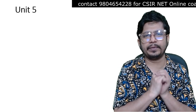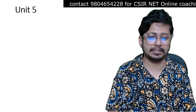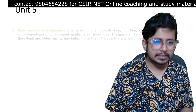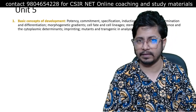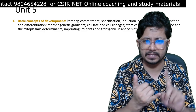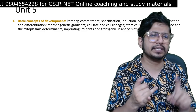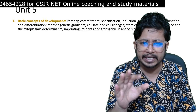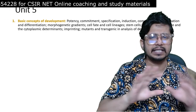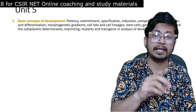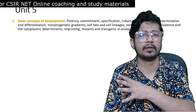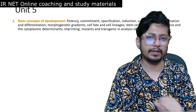Let's begin with CSIR NET Life Science Unit 5 syllabus. The syllabus is big so don't fear - I've kept the syllabus as it is and we have a color grading: green for most important, yellow for moderately important, and red for least important topics. Starting with the basic concepts of development - potency, commitment, specification, induction, competence, determination, differentiation, morphogenetic gradients, cell fate and lineages. This part is moderately important.